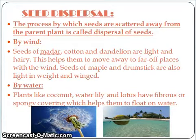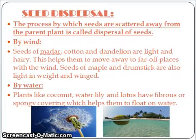Dispersal by water: Plants like coconut, water lily, or lotus grow near or in water and have a fibrous and spongy outer shell which helps them to float on water.